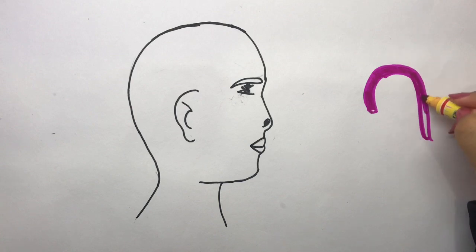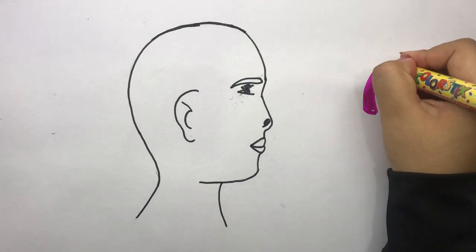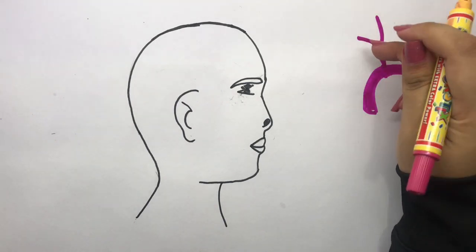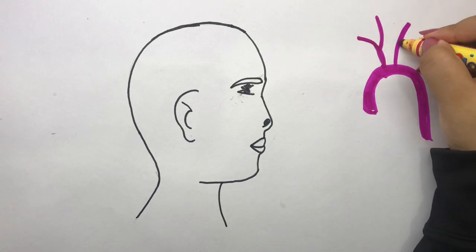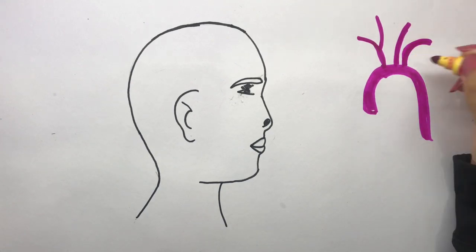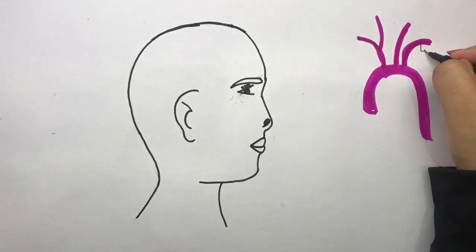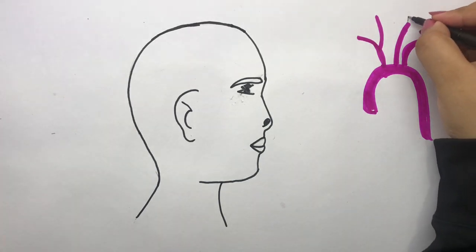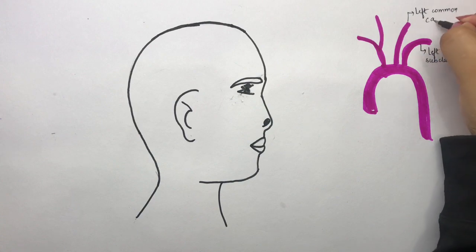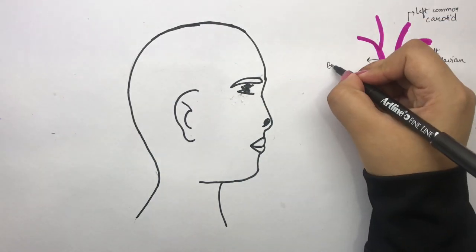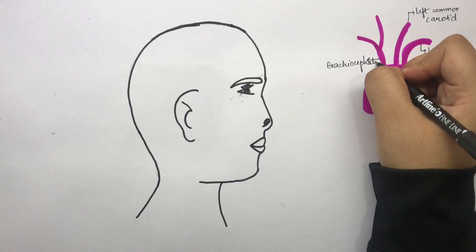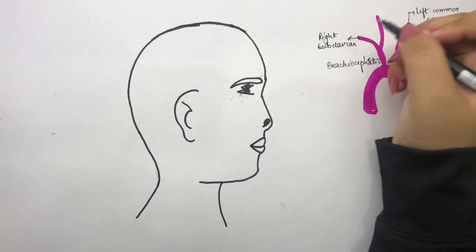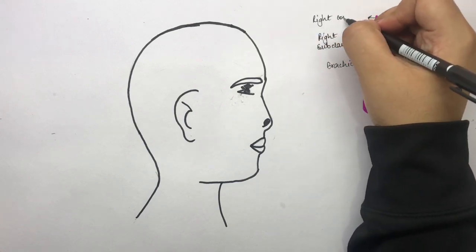Before starting, let's look at its origin. Let's assume this as our arch of aorta and some of its branches. This is our brachiocephalic, which is further divided into right subclavian and right common carotid. The other branches being the left common carotid and the left subclavian.